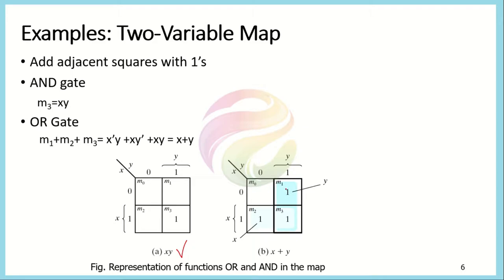There is actually no simplification that can be performed on the AND gate K-map because simplification can only be performed if we have adjacent squares with ones. In this example there is no other adjacent square with a one, so the original term holds. The AND operation is represented as xy, and it remains xy. For the OR gate, the output is one when either input is one or both are one, so we have three places where one is placed.